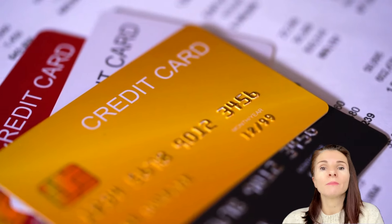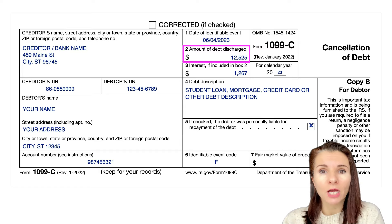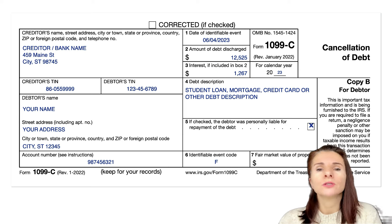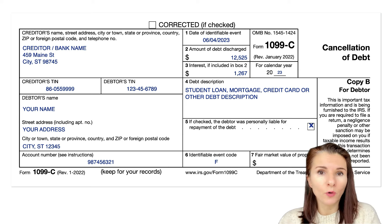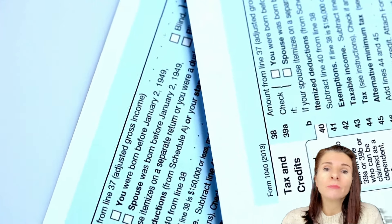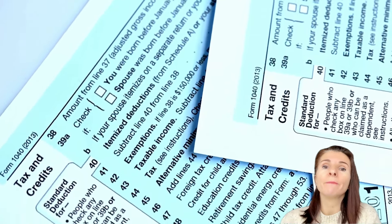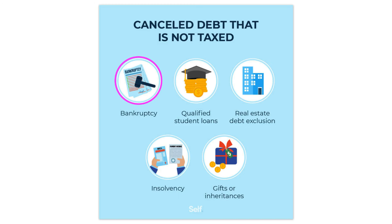Note: even if the amount of discharge is less than $600, you are required to report it. Generally, the amount shown on the form is considered taxable income by the IRS because the debtor receives a benefit without paying for it. However, there are a few exceptions.